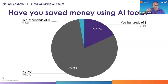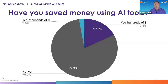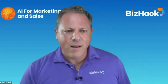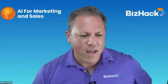Have you saved hundreds of dollars, thousands of dollars, or have you not saved money yet? Most of you have not saved money yet. I know personally that I've saved more than $20,000 in translation costs as a result of using ChatGPT — so it can really be an incredible money saver. With that, I'm going to stop sharing and invite Jeff and Nicole to call out some of what they're seeing in the chat.